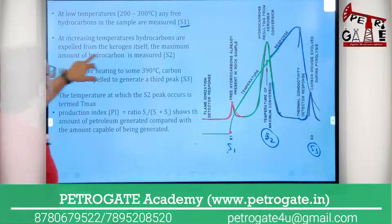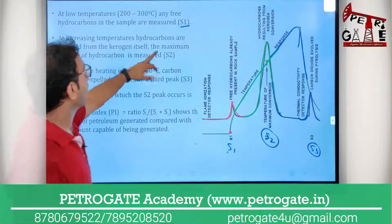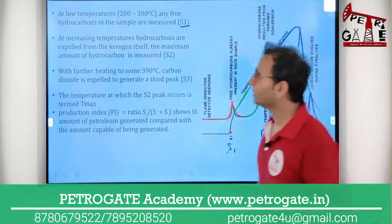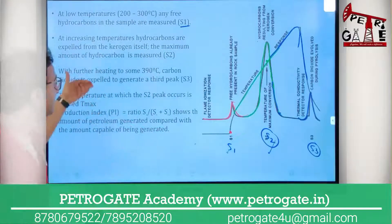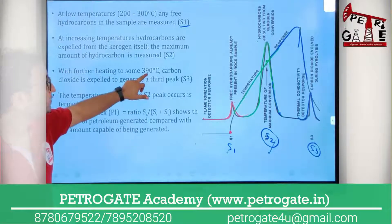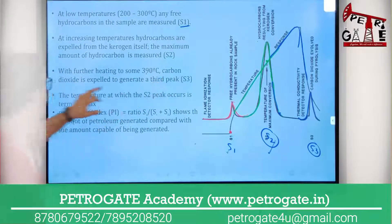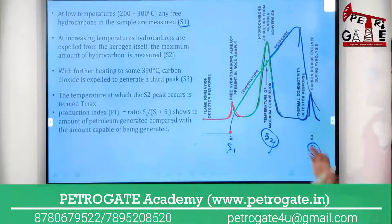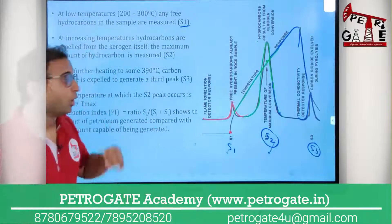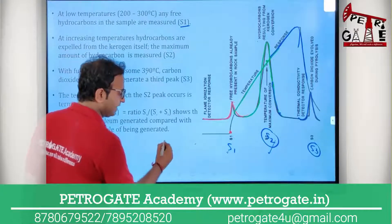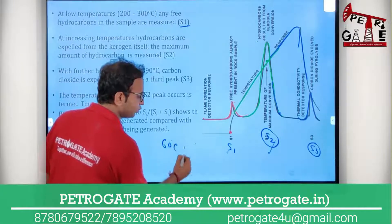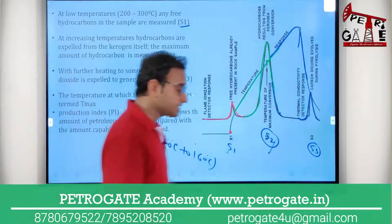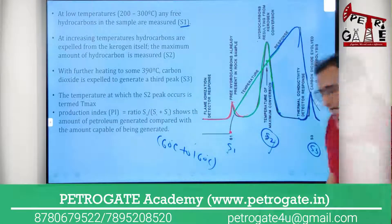At increasing temperature, hydrocarbon is expelled from the kerogen and the maximum amount is recorded as the S2 peak. With further heating at around 390°C, carbon dioxide is expelled, generating the S3 peak. The oil window temperature range in the subsurface is 60°C to 160°C, but in the pyrolysis experiment, hydrocarbons are generated at 200 to 390°C.